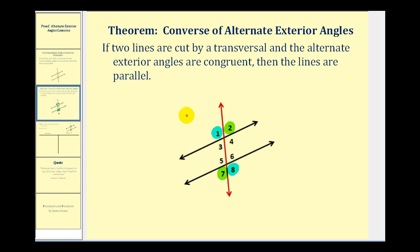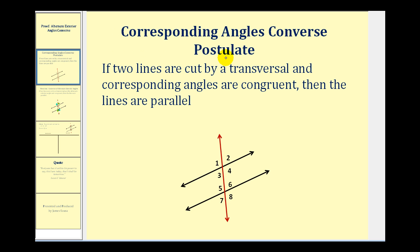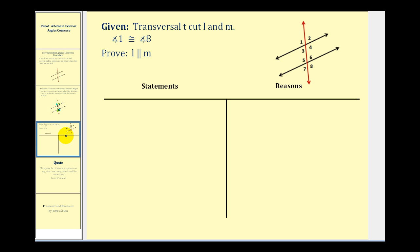We want to prove this theorem. The proof is based upon the corresponding angles converse postulate, which states that if two lines are cut by a transversal and corresponding angles are congruent, then the lines are parallel. Remember, a postulate does not have to be proved — it's assumed to be true.